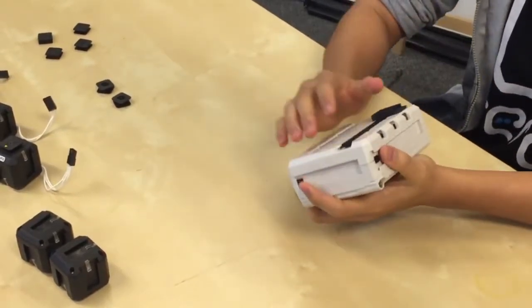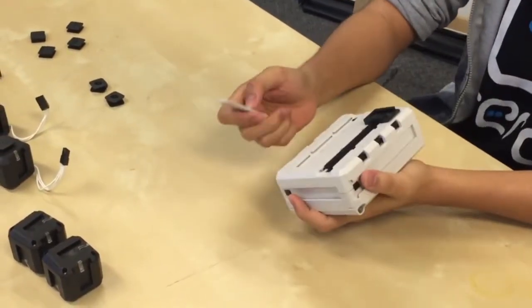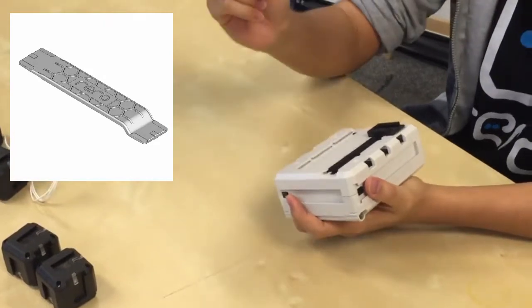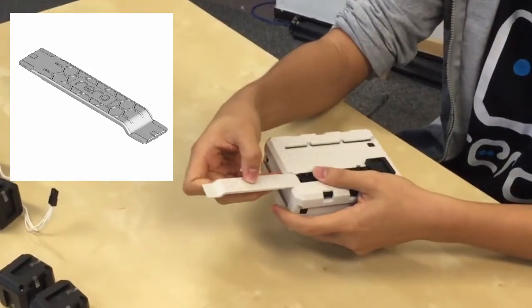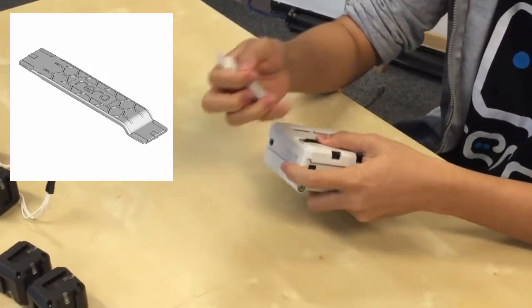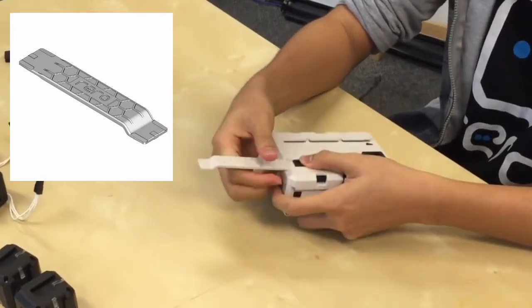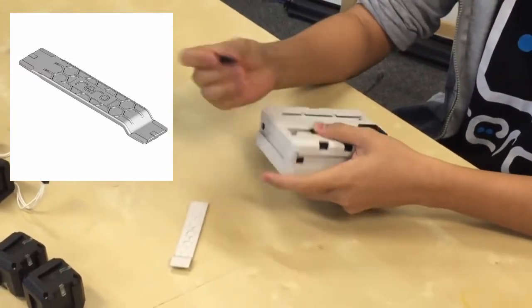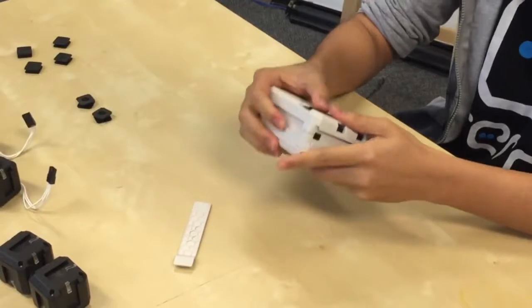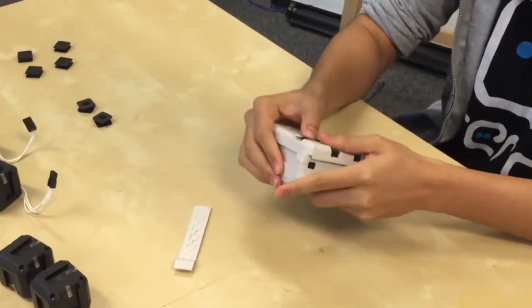Now just in case you put in the parts the wrong way, remember that you can always use the opener. Just push it into the slot, push it here and then push your parts. See it will come out. If you don't use the opener, the parts will not slide out no matter how hard you push.